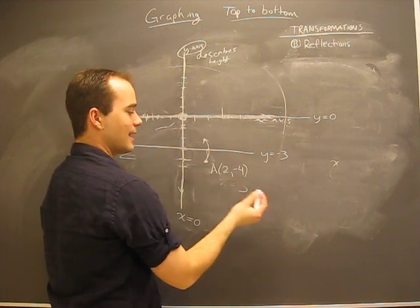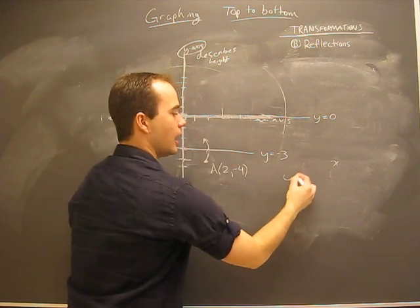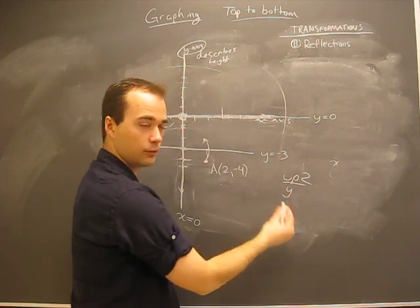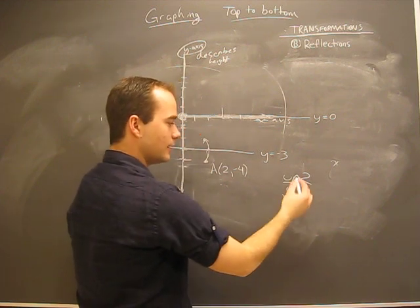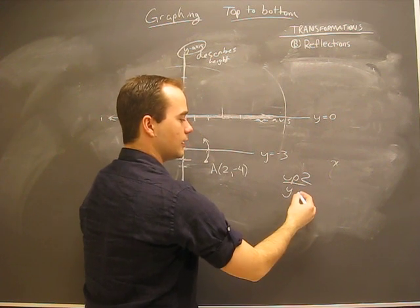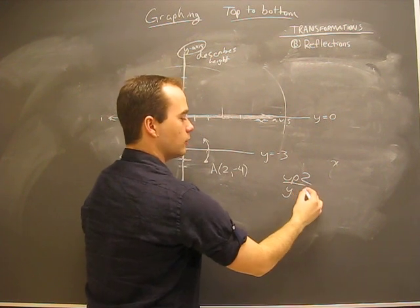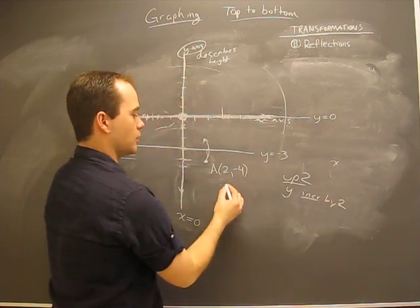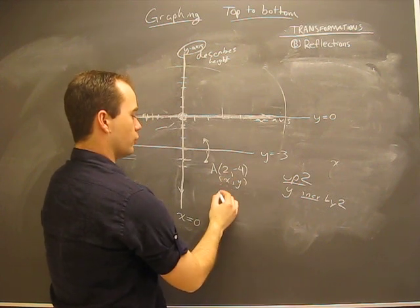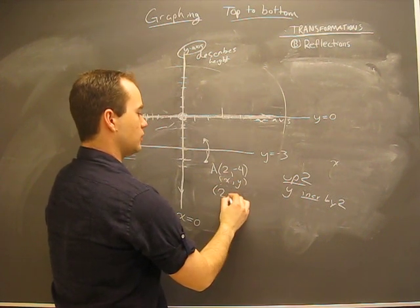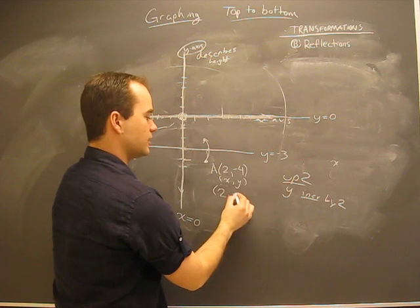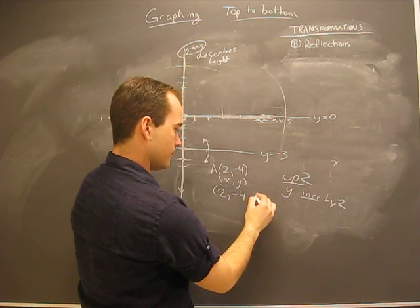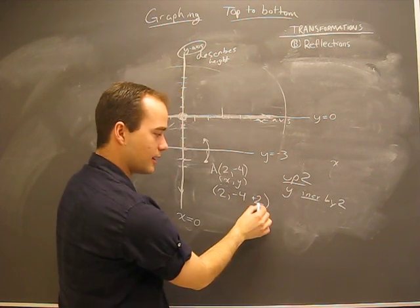We're going up, up. We're adding. We're going up 2. What this tells you is that we're dealing with changing the y value, the height, and we're going by 2. So y will be increased by 2. Now which is the x, which is the y? There's our x, there's our y. So really, this instead of being 2 and negative 4 becomes 2, and then negative 4 increased by 2.